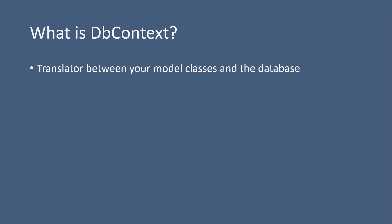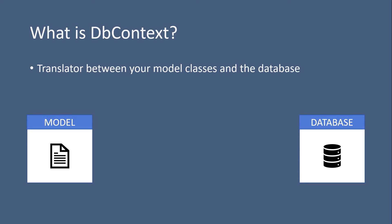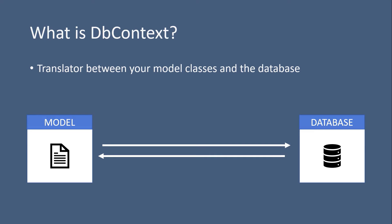Let us say you have a model, and on the other side you have the database. We use the model to send data to the database or get data from the database. But for the database — which in this case is going to be an SQL database — to understand the C# code, and vice versa, you need to have a file in between. That is going to be the DbContext file, which understands both C# and SQL.